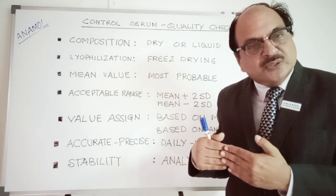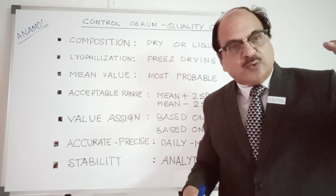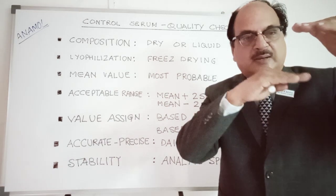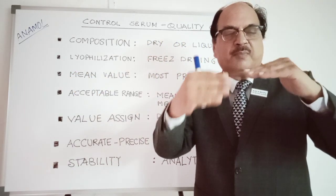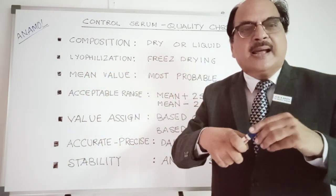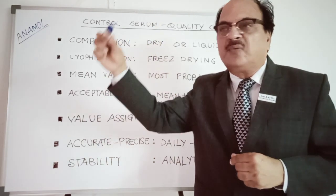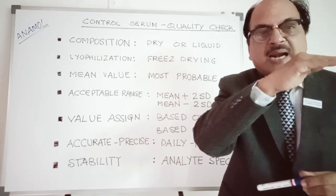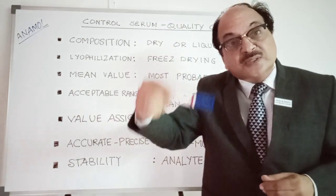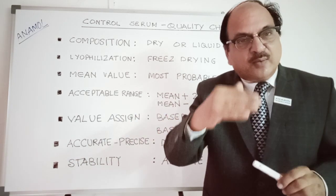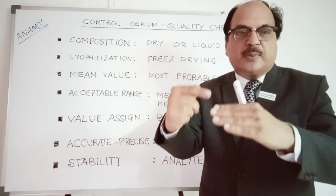Precision is reproducibility. If I use a control serum of a certain lot and my HDL value is 50, and I continue using the same lot every day for 30 days, do my values consistently fall in the same range or do they fluctuate too much? To monitor this, I plot a Levey-Jennings chart: the mean value in the center, upper and lower ±2 SD lines on the y-axis, and days on the x-axis. I plot my daily HDL control values. If values gradually drift down each day, I need to recalibrate; if they fluctuate too much, I need to standardize lab variables. If values consistently stay within ±2 SD, results are worth reporting to the clinician.